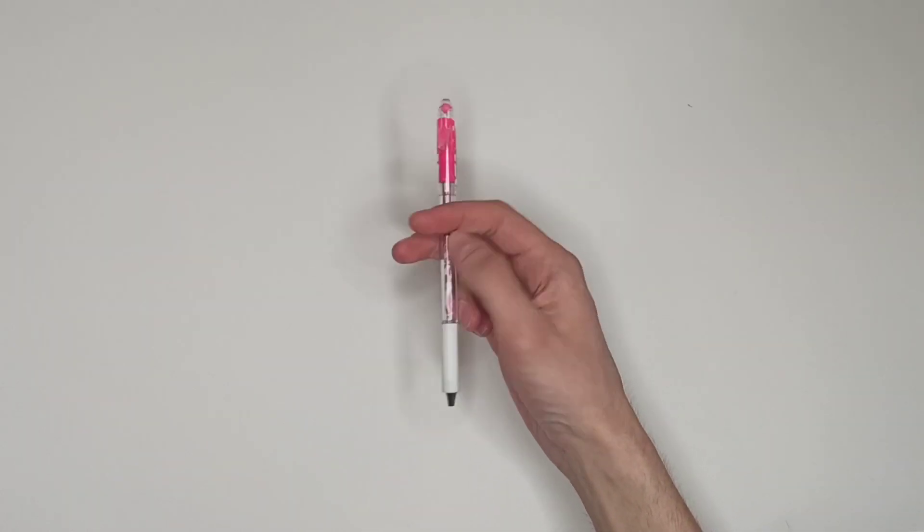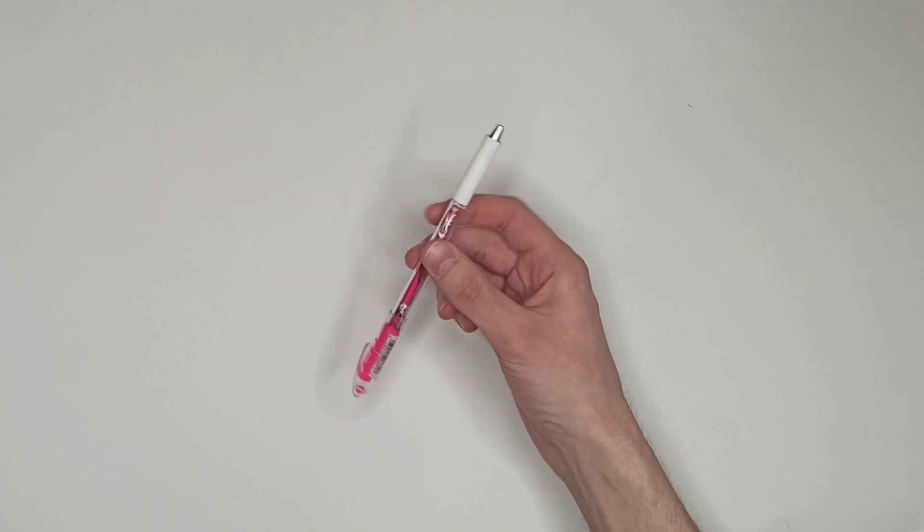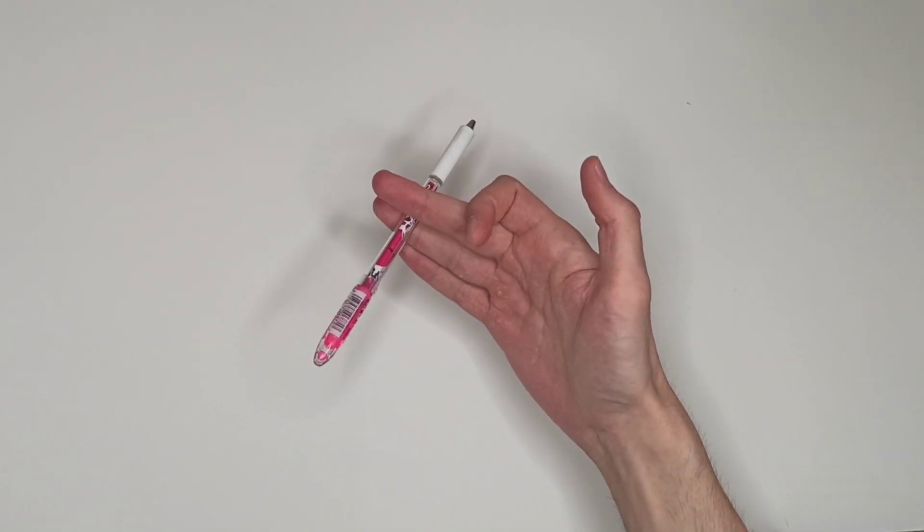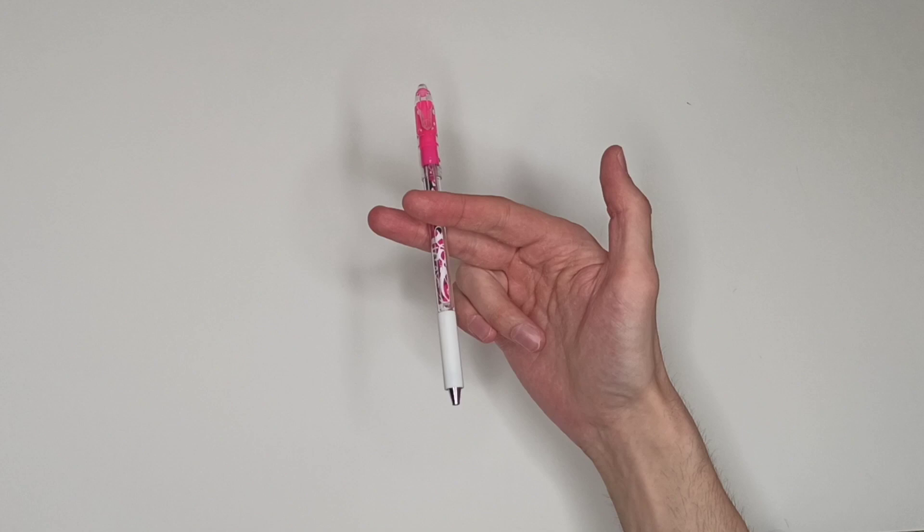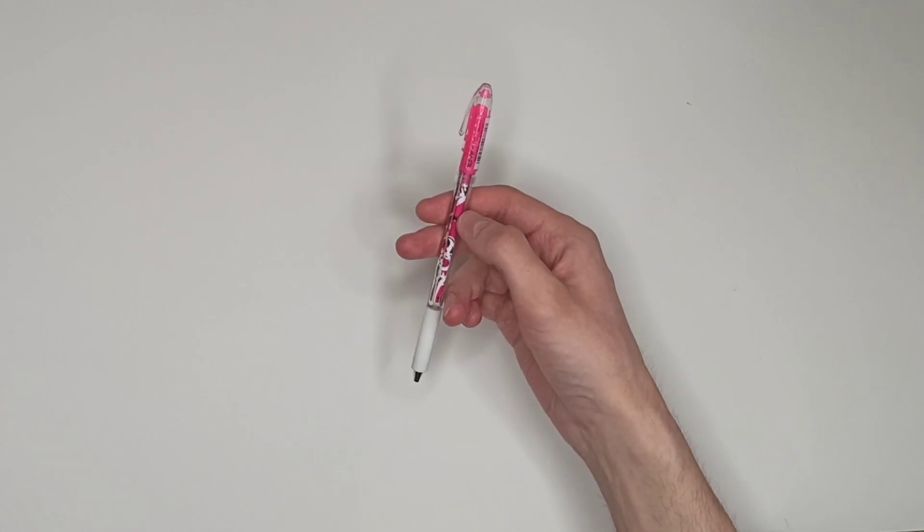Quick recap. First step, swing the pen down. Second, straighten your fingers, grab the pen with your index finger and the middle finger.